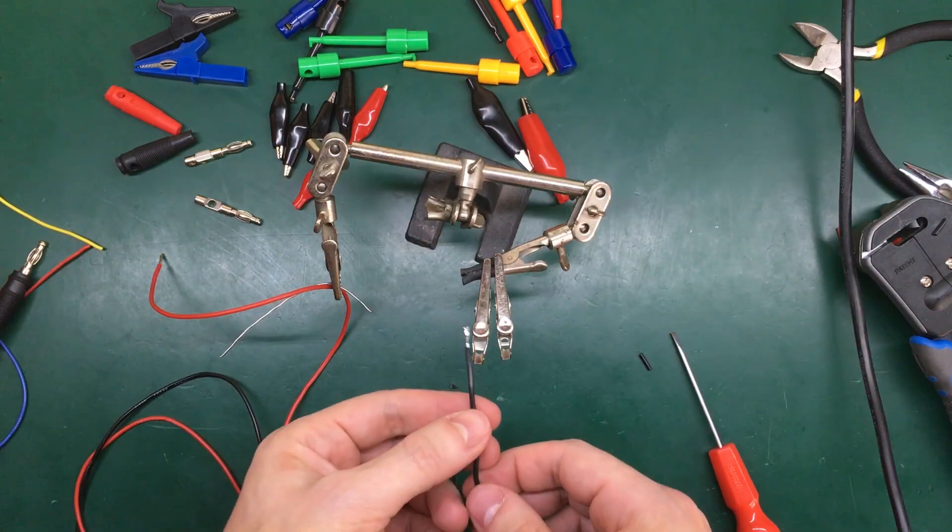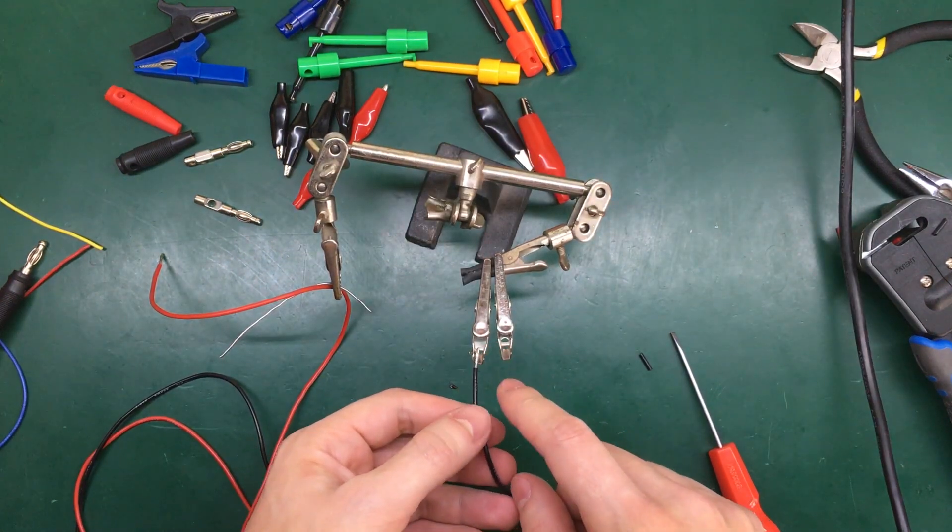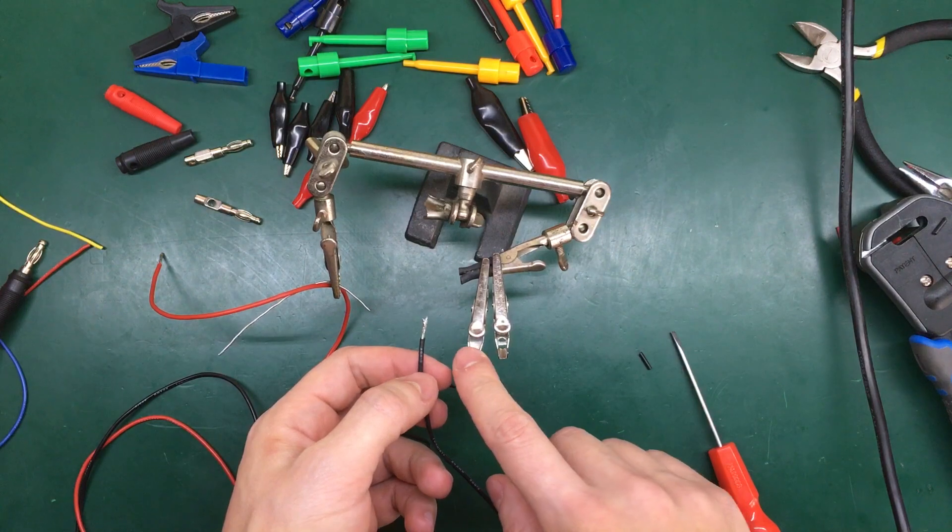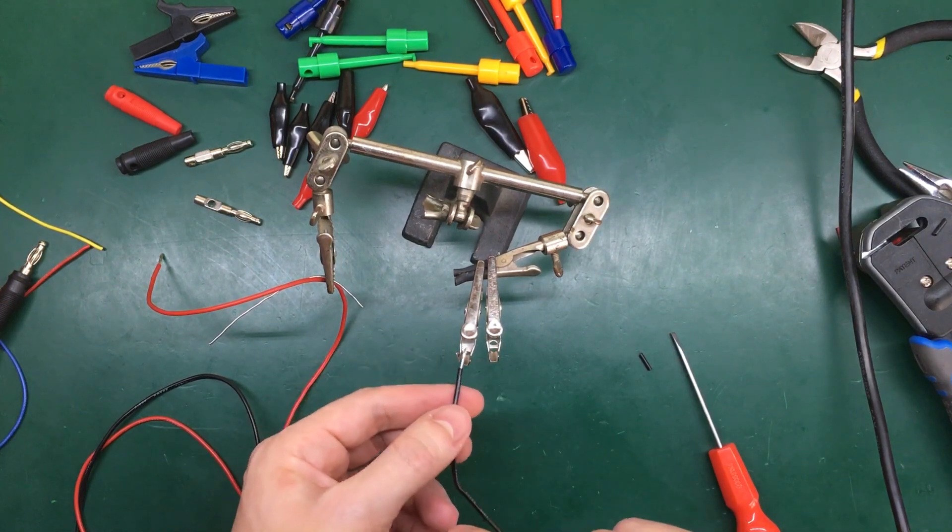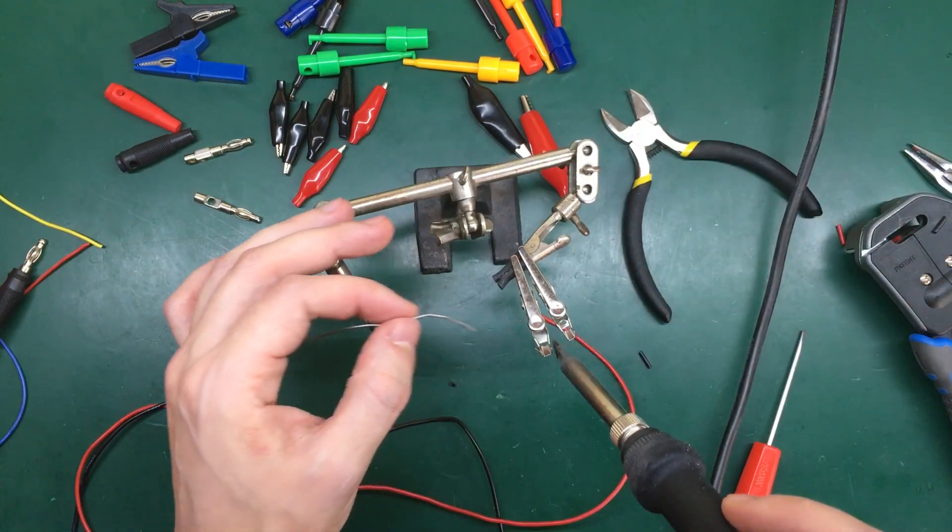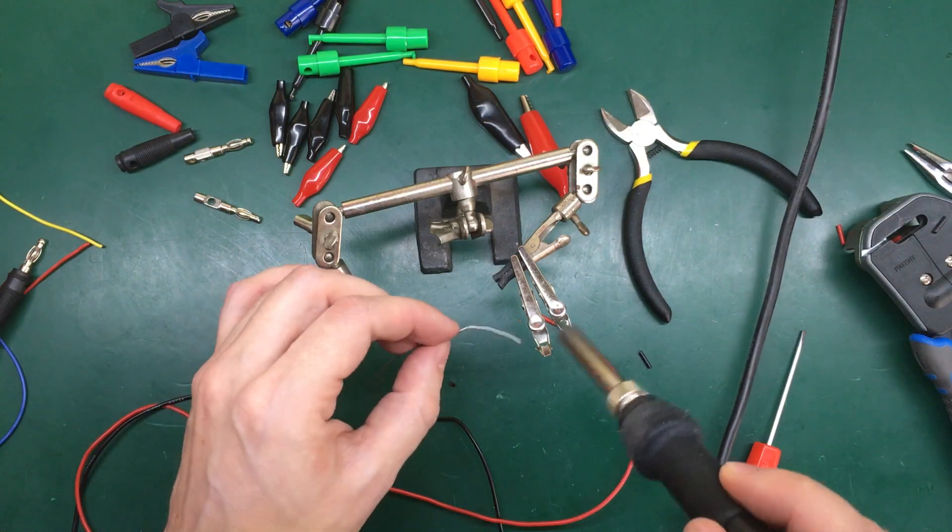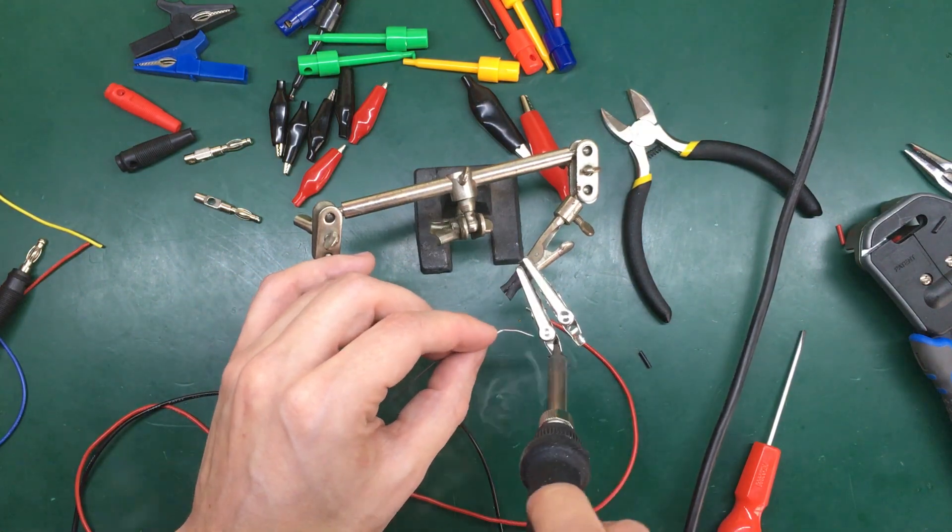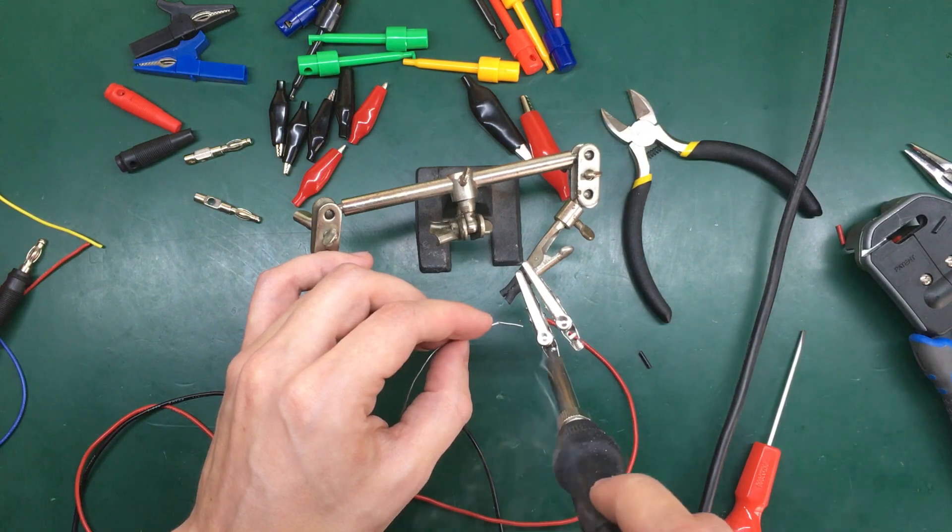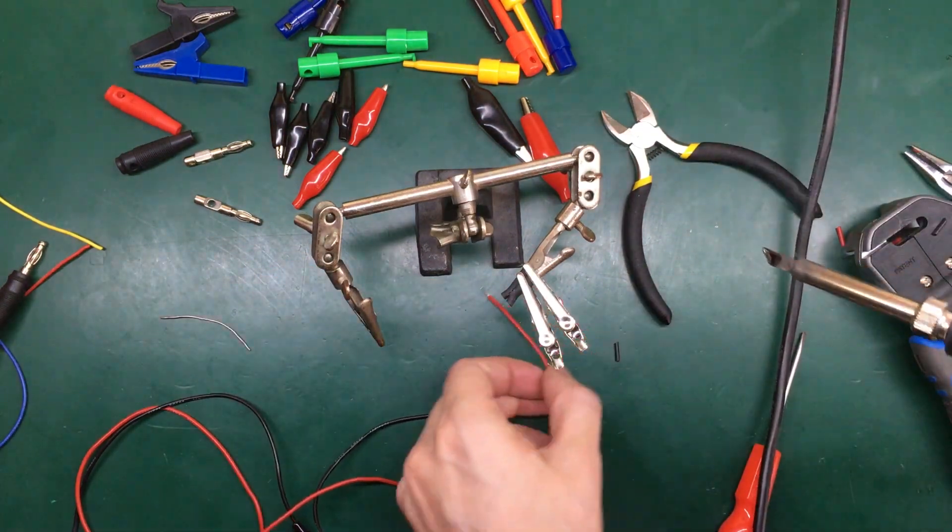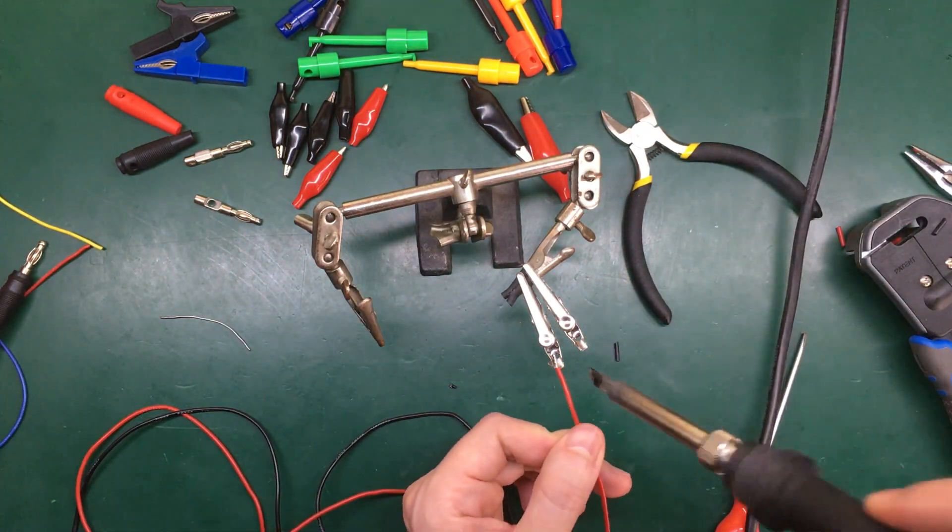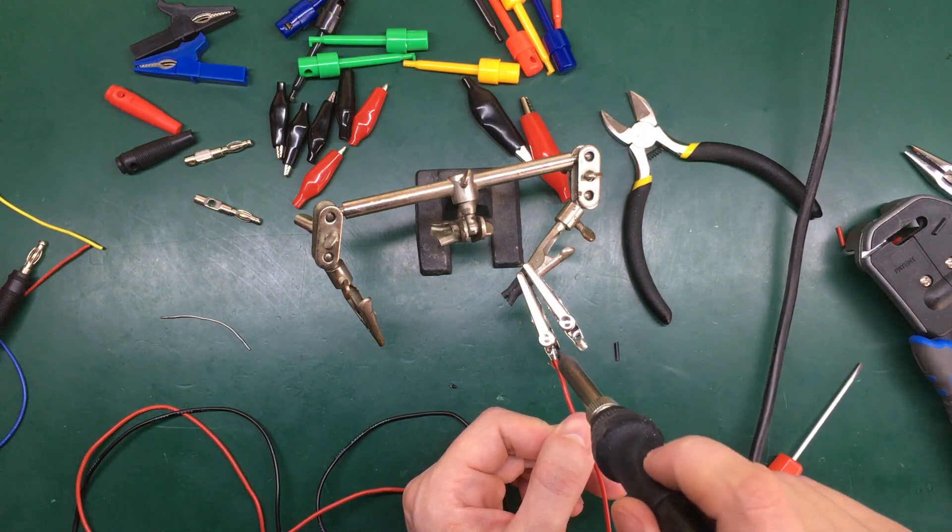I always like to solder the wires to the alligator clips. I don't like relying just on the mechanical connection. I'm going to add a bit of solder right on the alligator clip. So now it will be very easy to go in there and just solder the wires.